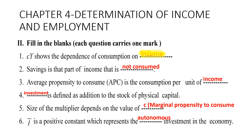Second: savings is that part of income that is not consumed. Third: average propensity to consume (APC) is the consumption per unit of income.